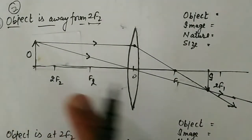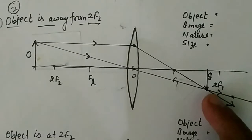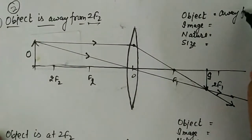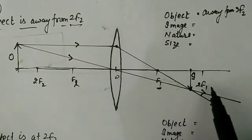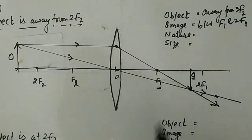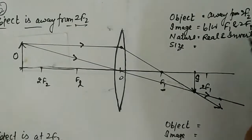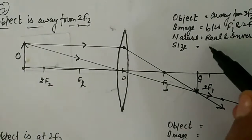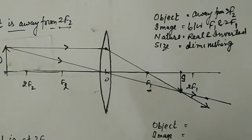So this is our image and this is the object. If you see this object through this lens, this image will be formed. It is an inverted image. When your object is away from 2F2, the image is formed between F1 and 2F1. The rays are actually meeting, so it is real and inverted. Comparing the sizes, the object size is bigger, so the image size is small — it is diminished.